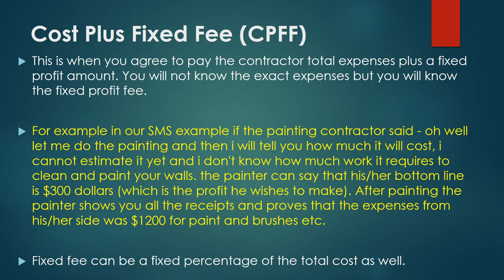For example, a painter brings all their receipts and says the paint, brushes, and materials cost three hundred dollars, and their profit should be twenty dollars — so you pay three hundred and twenty dollars total. In the cost plus fixed fee contract, the fixed fee is already known, so you are mainly concerned with the expenses. If the painter's expenses come to one thousand two hundred dollars and the fixed fee is three hundred dollars, you pay one thousand five hundred dollars total. The fixed fee can also be set as a percentage of total cost.